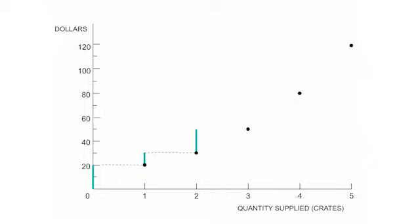You can continue raising the price and seeing how much will be produced. As the price rises, the quantity supplied increases. We've derived the supply curve — a description of how many pumpkins the farmer will produce at different prices. It's upward sloping, just as we expect. Sometimes the steps look a little discrete because of whole crates, but more generally we draw a smooth line through the points.